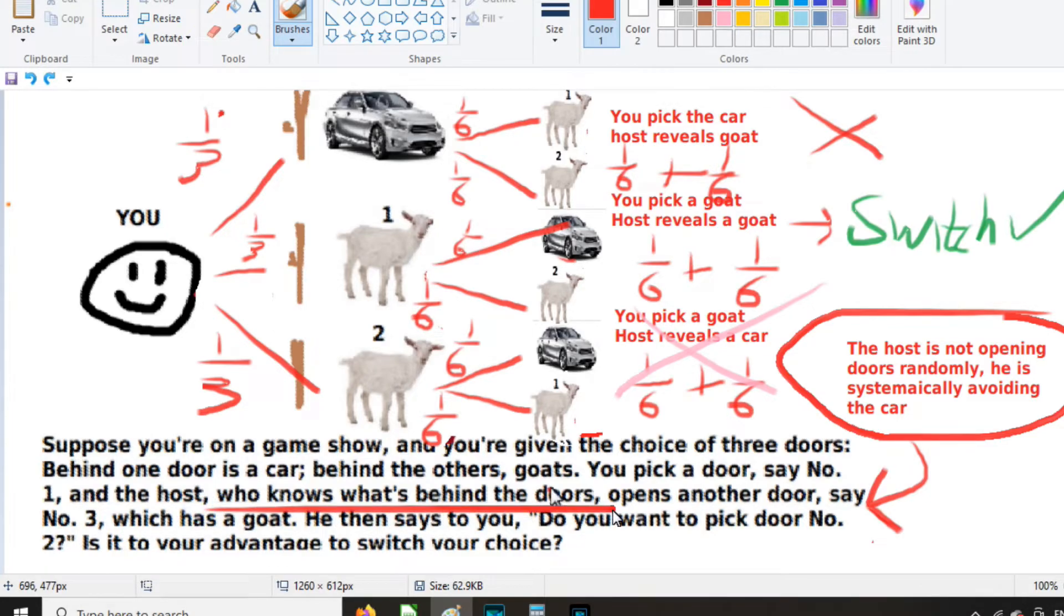I know people are going to say, because he knows what's behind the doors, it therefore logically follows that he will systematically avoid picking the car. That does not logically follow. There's no rule stated here that he can't pick the car. He could pick the car 98% of the time, and this could still be true. So that is a logic error. And just because his system is non-random, it does not mean that that is his method of selection. There could be a whole variety of other forms of non-random selection.